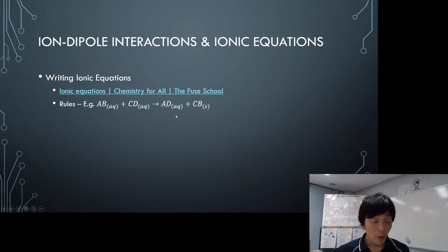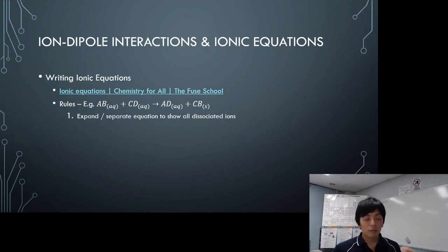AD is one of the products. It's (aq), it says. So it's still dissolved in water, meaning ions are present. That's one of the products, but they're dissociated. They're floating around as ions. Now, this one is a bit different. You get another product called CB, and it says S. So that's a solid. So that's not an ion. They're ions, but they don't want to dissociate anymore. They want to stay as it is.